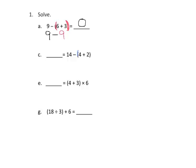Similarly, we've got parentheses right here, so that's 4 plus 2 is 6. And now we have 14 minus 6, which is 8. Here we've got 4 plus 3 is 7, and 7 times 6 is 42.